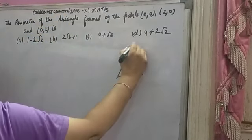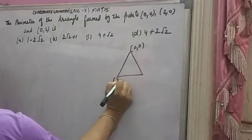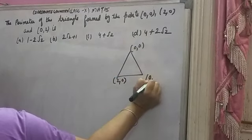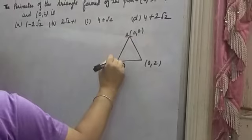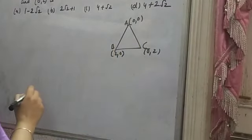Three points are given. First point is (0,0), second is (2,0), and third is (0,2). Suppose these are A, B, C. You have to find the perimeter.